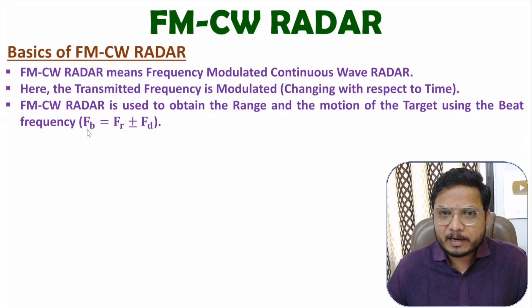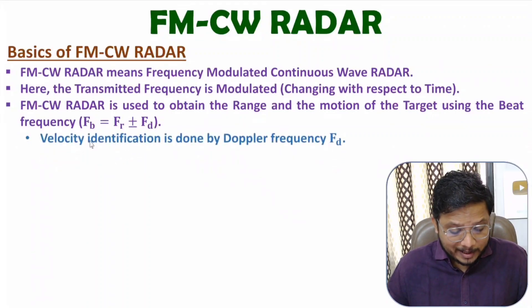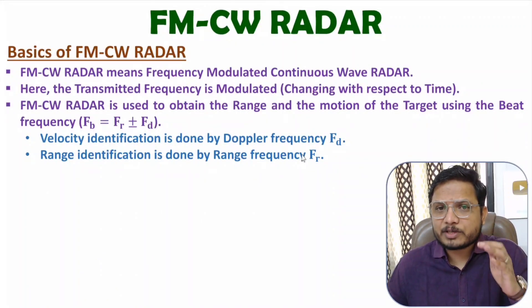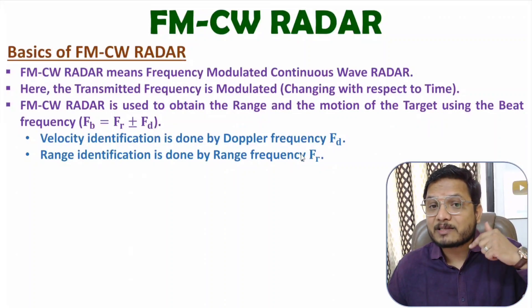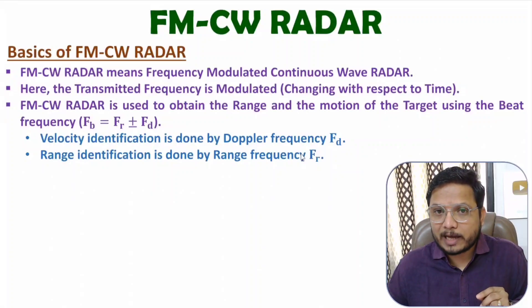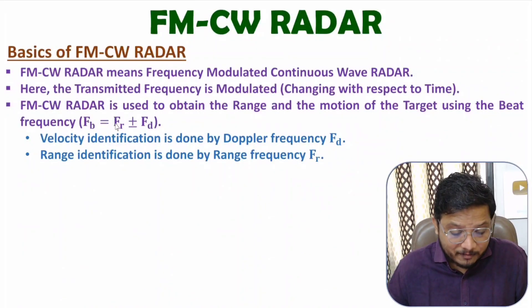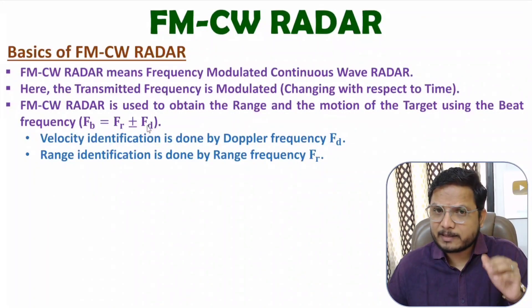Beat frequency is FR plus or minus FD, where velocity identification is done using plus or minus FD, that is Doppler frequency, and range calculation is done using FR, that is range frequency. In this video, I'll be deriving equations of FR and FD based on the block diagram. The transmitted signal frequency changes with respect to time, and based on the received echo signal, we identify beat frequency. Based on FR, we identify range of the target, and based on FD, we identify motion — that is velocity — of the target.